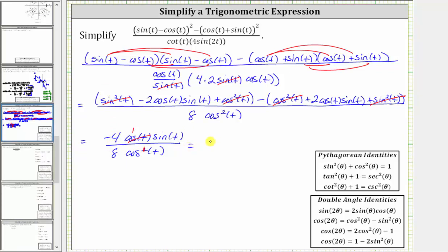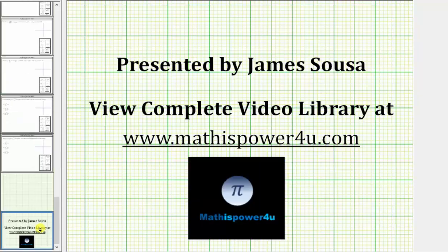And we know negative four eighths simplifies to negative one half. This is equal to negative one half. Then we have sine t divided by cosine t, which is equal to tangent t. The given expression simplifies to negative one half tangent t. I hope you found this helpful. Thank you.